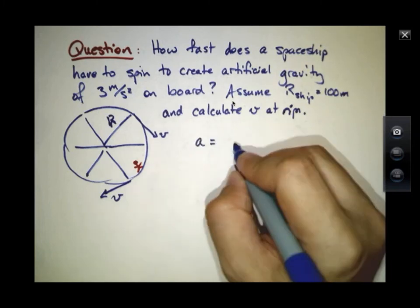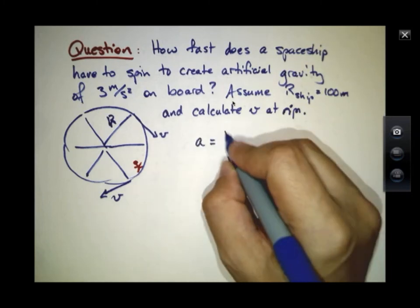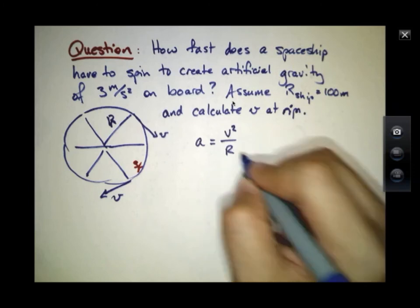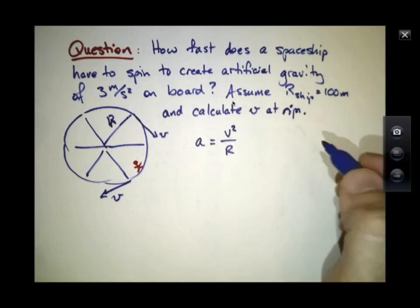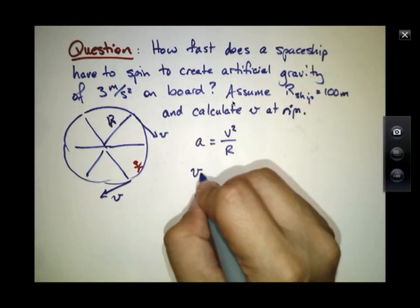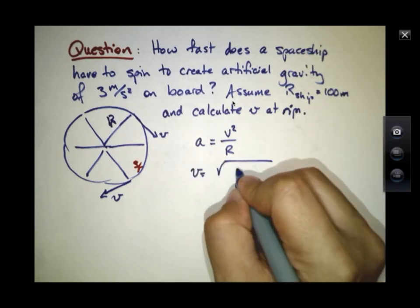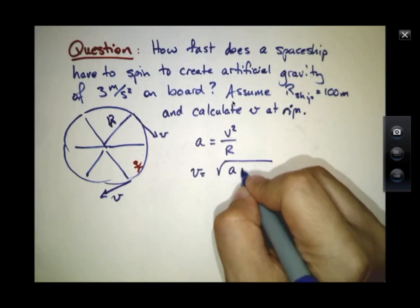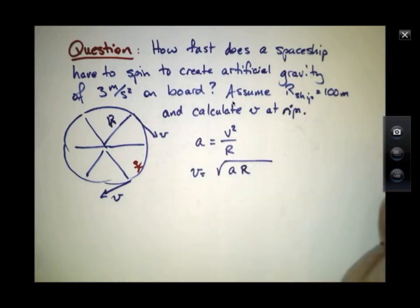Well, we're saying that the acceleration, which has to be v squared over r, is going to equal 3 meters per second squared, and we would like to know v. So the velocity, or the speed at the rim, has to equal the square root of the acceleration we want, times the radius of curvature.